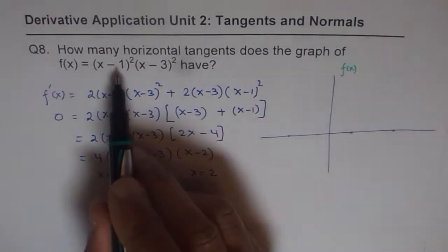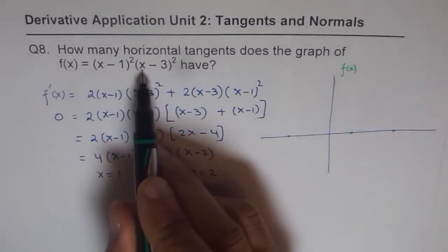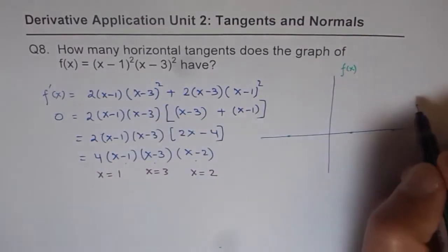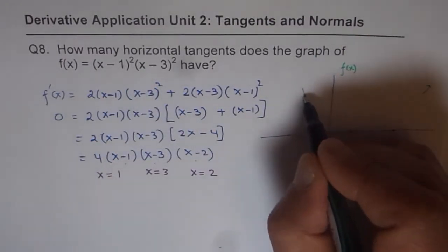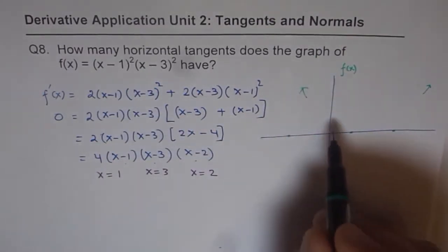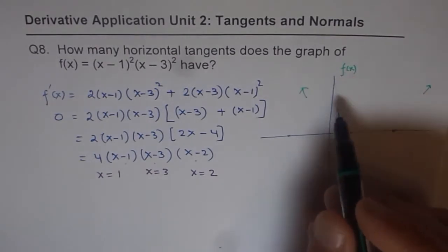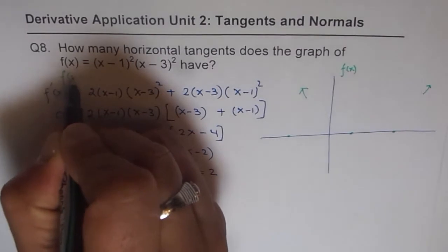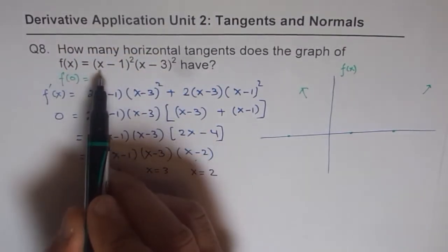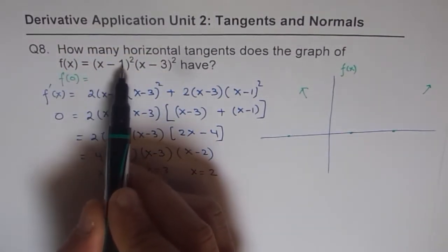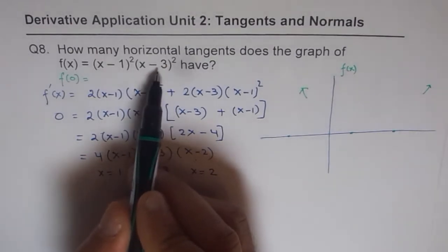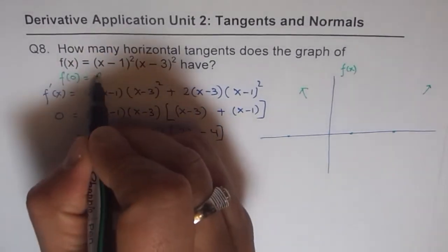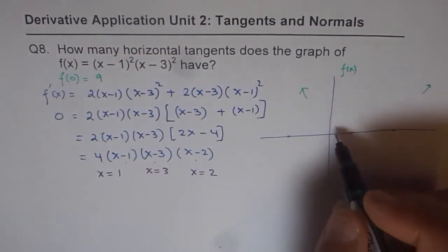Now, degree is 4, leading coefficient is positive, and therefore, the graph should move upwards. We can find what f(x) is when x equals to 0. So, let's find out what is f(0) equals to. If you put 0 here, you get minus 1 square, which is 1, and 3 square is 9. So, it is 9 for us. And you can see...